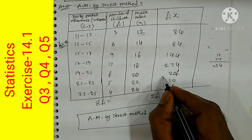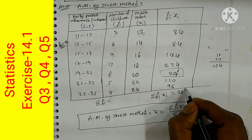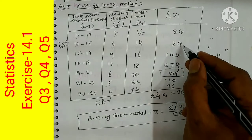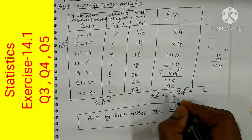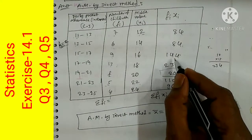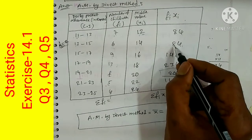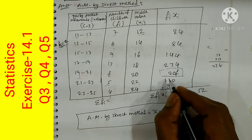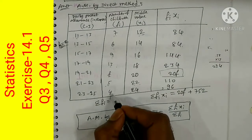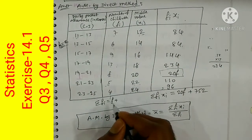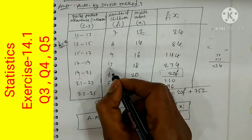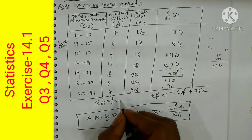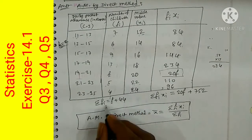Now we add all the Fi·Xi values. The unknown term is 20F, and adding the remaining known values gives us 20F + 752. For the total frequency Sigma Fi, we add: 5 + 4 = 9, plus 13 = 22, plus 9 = 31, plus 6 = 37, plus 7 = 44, giving us F + 44.